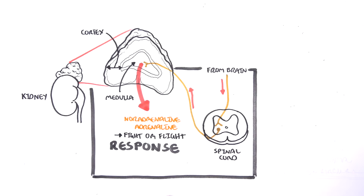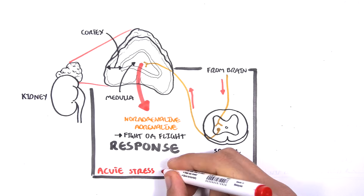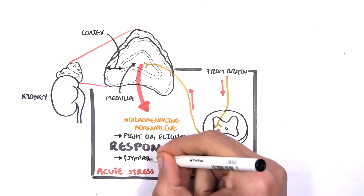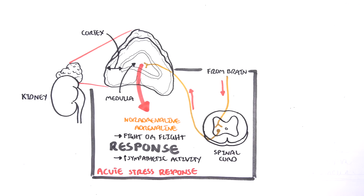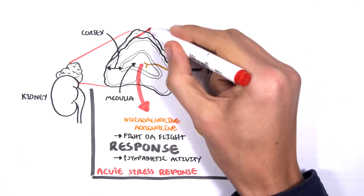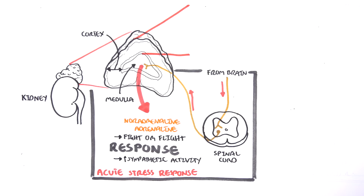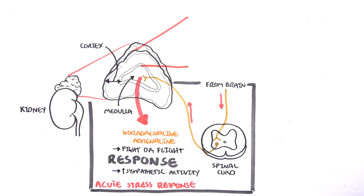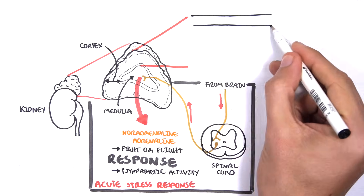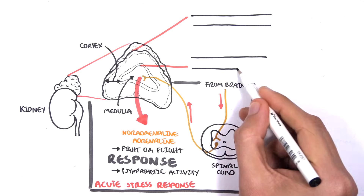This is what we see during acute stress — when we are nervous, running away in fear, or get a sudden jolt of horror. The adrenal cortex, on the other hand, is responsible for the long-term stress response.